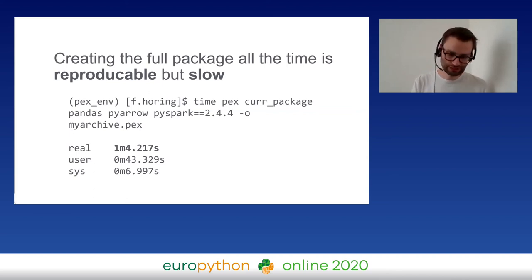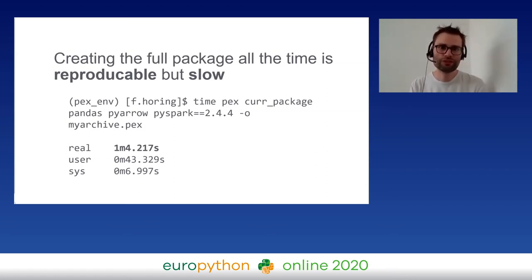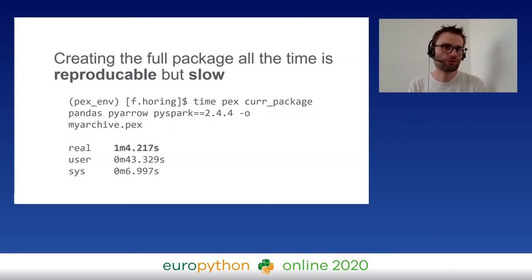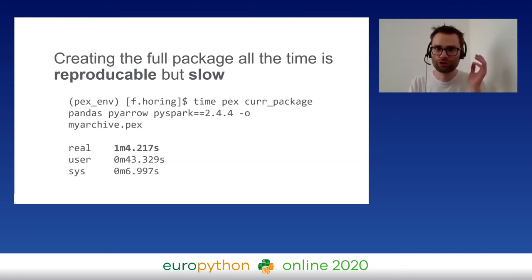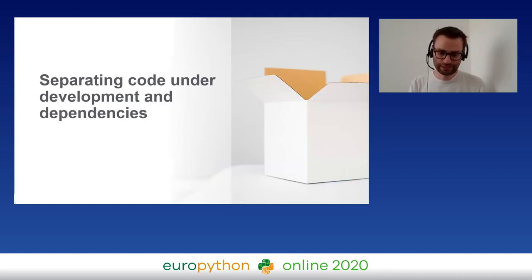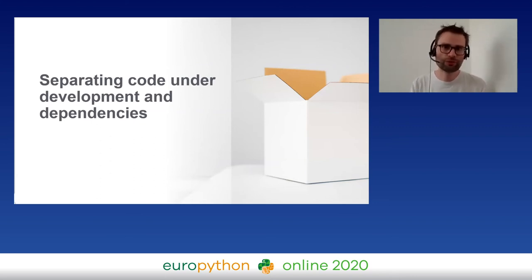This is nice and reproducible, but slow. You create your pex and it takes about one minute — the reason is the pip resolver. But basically all packaging is slow: whether you create pex, use pip, conda, or even Docker, everything is slow. Nothing is really fast, but you want to iterate fast when you develop. Having one minute just to launch a job is quite a long time to wait.